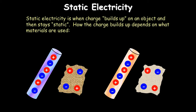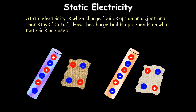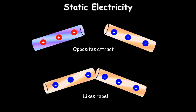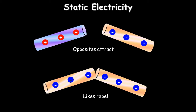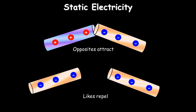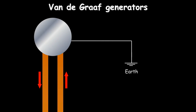Static electricity — charges that are not moving — is created by friction. Rubbing a cloth against a rod can transfer electrons from the rod to the cloth, leaving the cloth negatively charged and the rod positively charged. Only electrons are free to move, and they are negative. Depending on the materials, electrons may transfer in the opposite direction. The basic law of electrostatics: opposites attract (opposite charges are pulled together) and like charges repel.